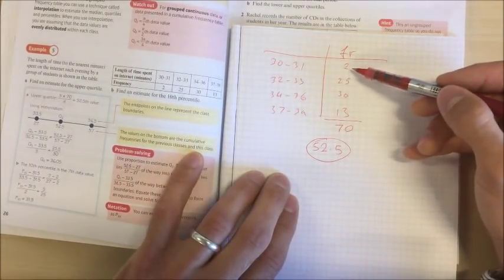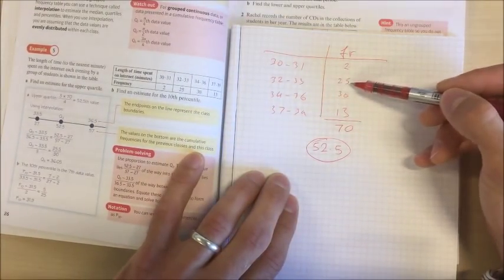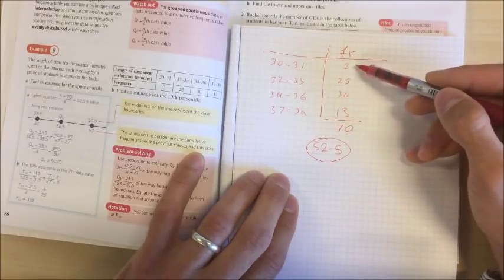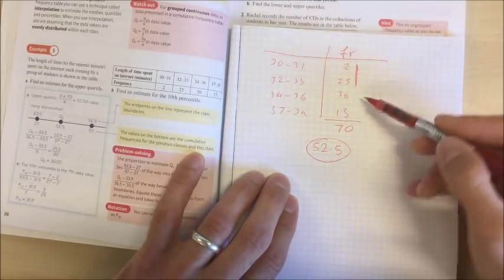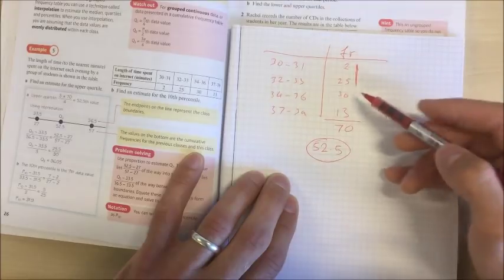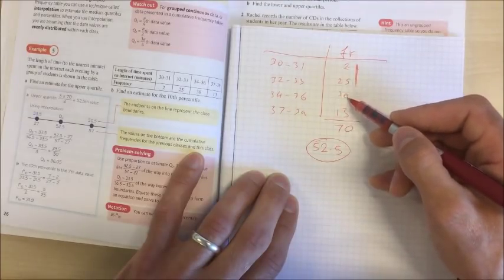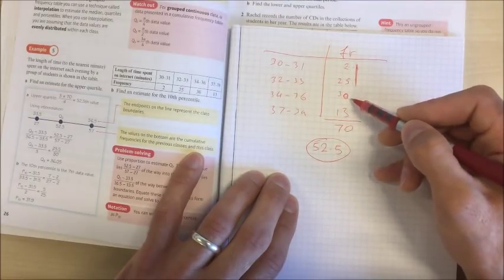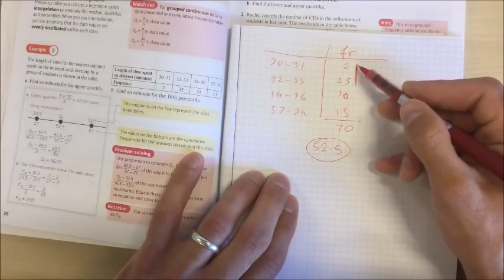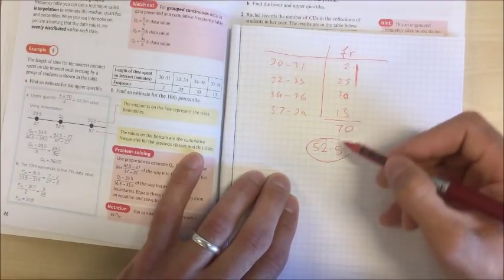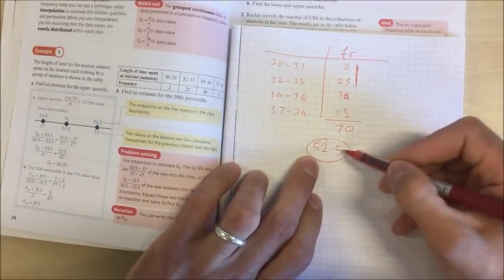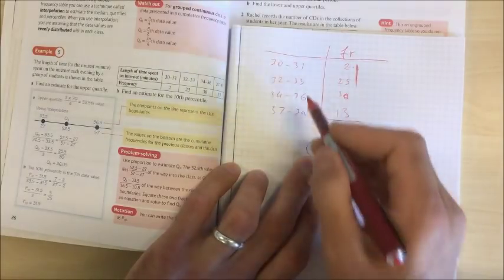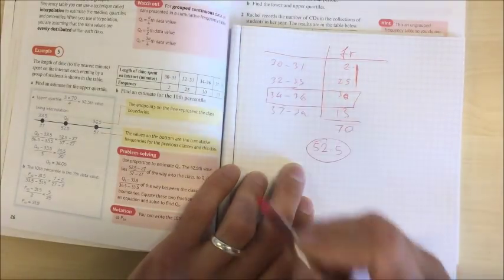Now if we go through our table the first two pieces of data, the first 27 pieces of data 2 and 25, are in these two classes. And so 27 and 30 takes us up to 57, so the 52 and a half piece of data is somewhere in this row of the table.